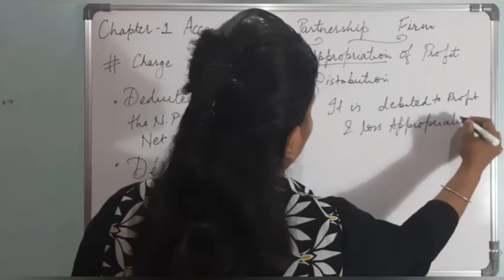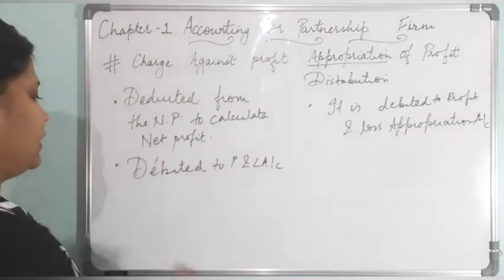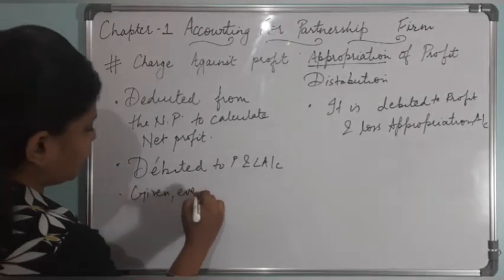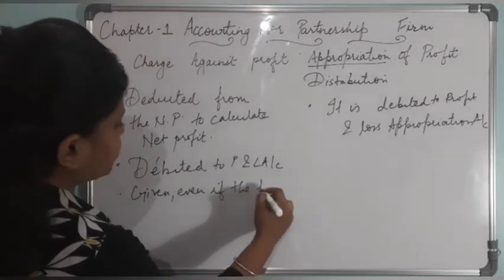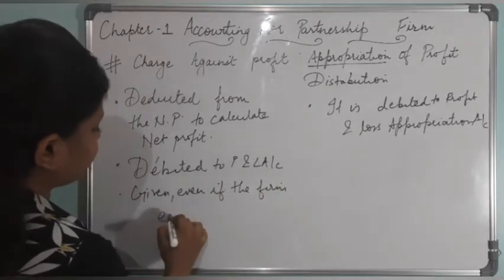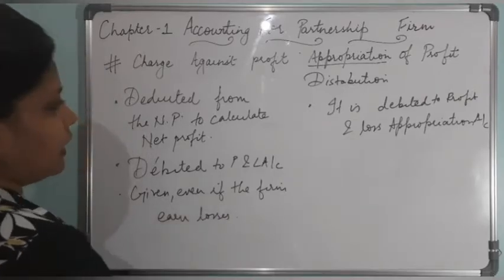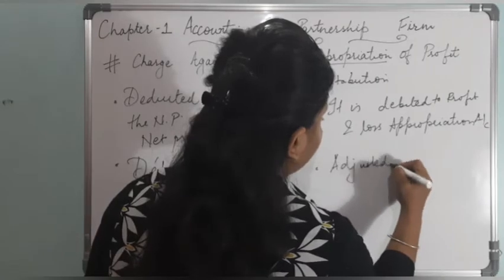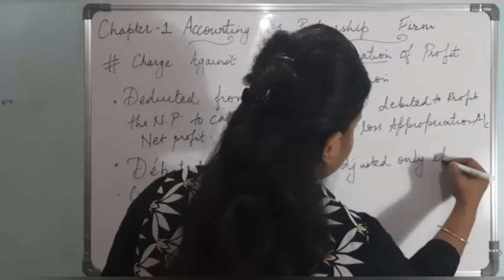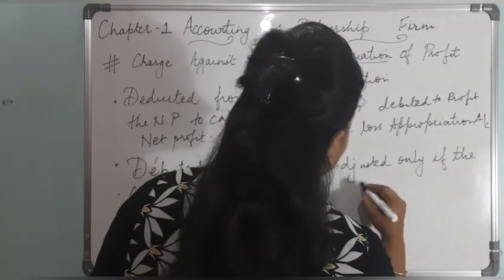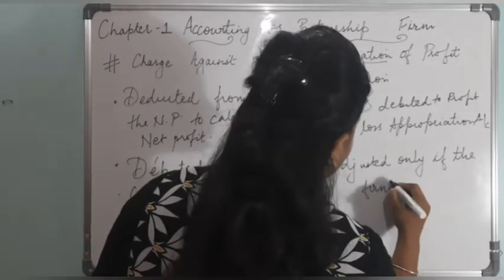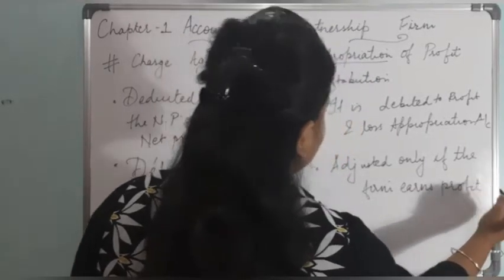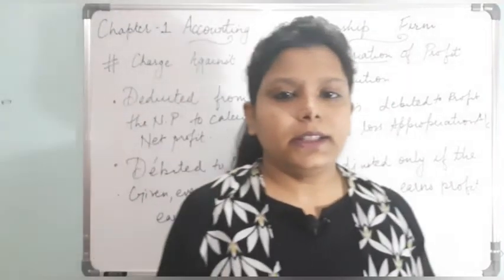Those items which are charged against profit are given even if the firm earns a loss. But appropriation items are adjusted only if the firm earns a profit. We will deal with those items accordingly in these cases.